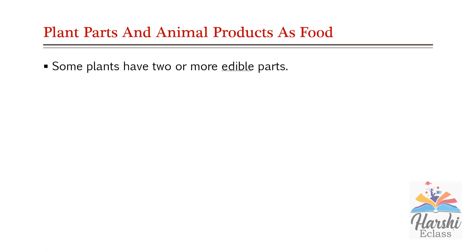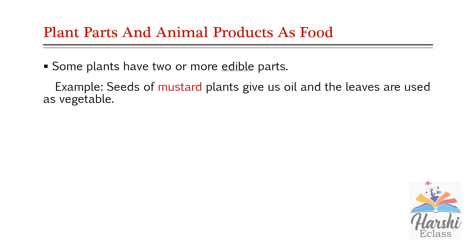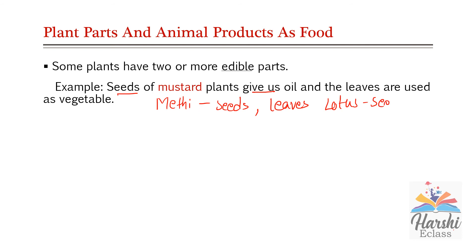Some plants have two or more edible parts. Edible means plant parts which are safe to eat. For example, the mustard plant — the seeds of the mustard plant give us oil, and the leaves are used as vegetable. Methi seeds are used as spices and its leaves are used as vegetable. Another example: lotus — lotus seeds are used as dry fruits and its stem is used as vegetable.